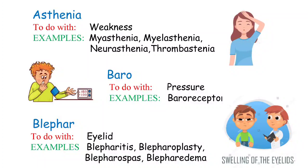Thrombasthenia is a bleeding disorder due to weak platelets. In this condition, platelets contain low levels of glycoprotein, which is the receptor for fibrinogen. Since fibrinogen is a protein essential for clot formation, low glycoprotein levels result in bleeding instead of clot formation.